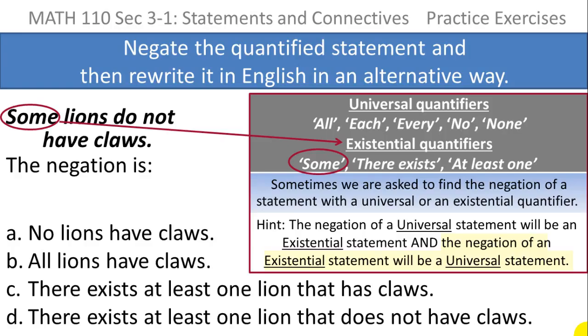Since I picked out the fact that 'some' is existential, I know that the negation will be one of the universal ones: all, each, every, no, and none. Now looking at the choices, C and D both are in the same category as 'some,' so it can't be C or D. So right away I've eliminated two of the four choices.